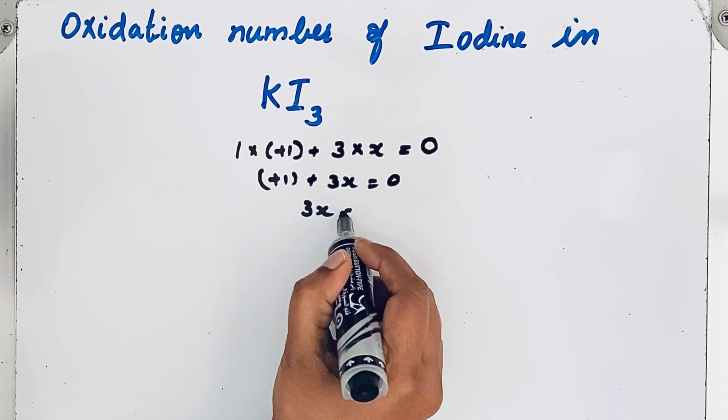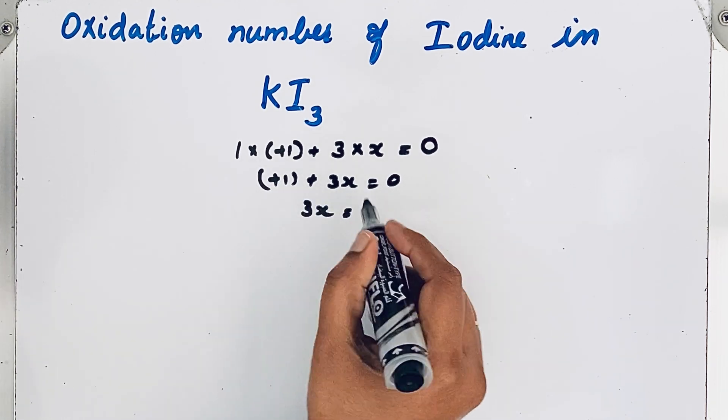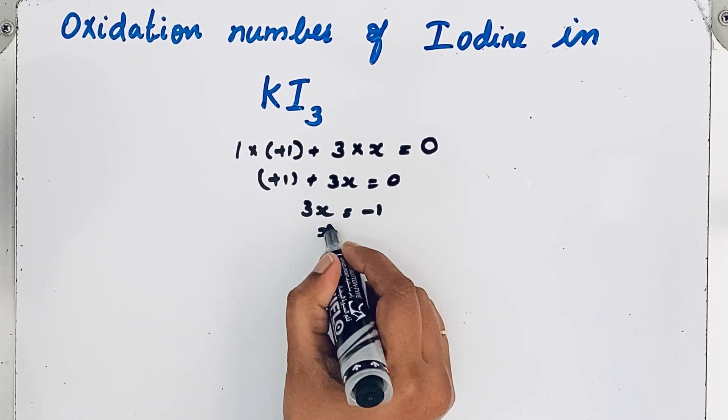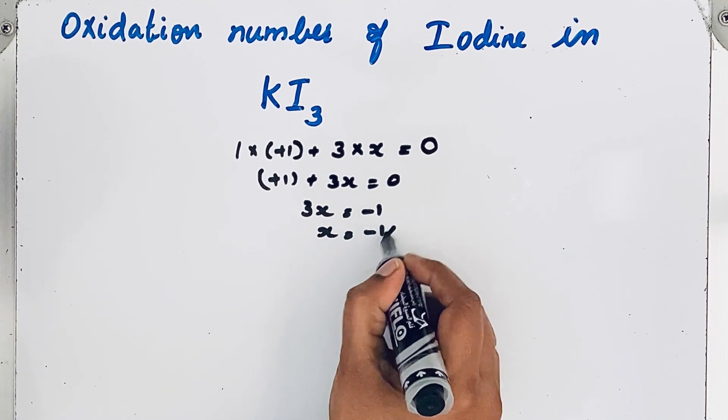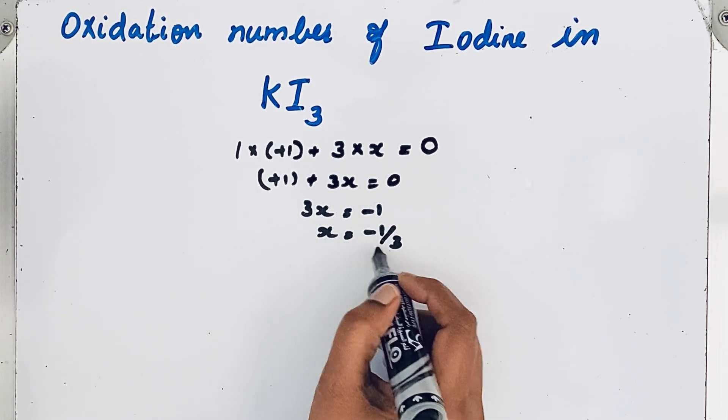So when 3x goes to this side and plus 1 goes to this side it becomes minus 1. So x is equal to minus 1 by 3. It is a fraction.